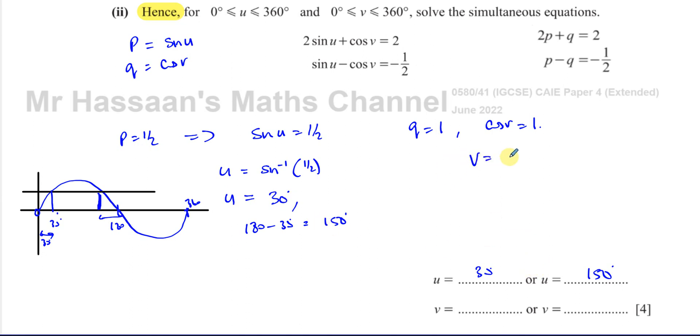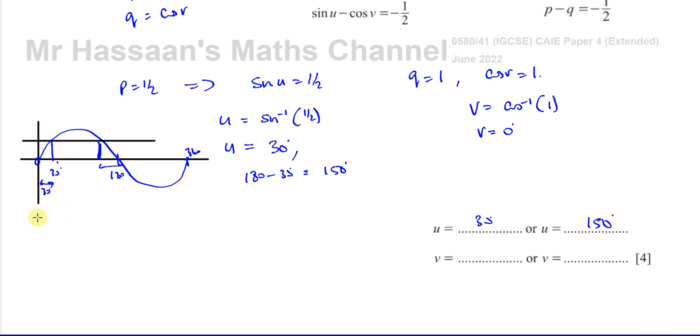Now for v, we find the first angle by doing inverse cosine of 1, which gives us 0. The cosine curve starts from 1, goes down to 0 at 90 degrees, minus 1 at 180, back to 0 at 270, and back to 1 at 360. So it's at 1 at 0 degrees and the next place is 360 degrees. The general rule to find the other angle for cosine is 360 minus the principal angle, which gives 360. So it's 0 degrees and 360 degrees for v.